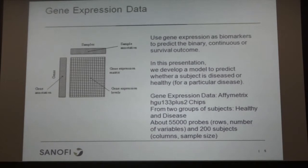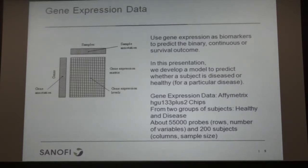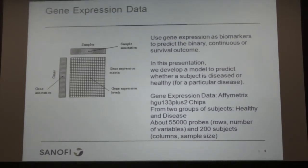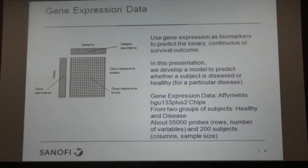The data structure is quite straightforward — it's just a big matrix. Each row includes all the data from one particular gene, so we have many rows and many columns. Each column is for one sample, patient, or subject. The goal is to predict the outcome using gene expression — the outcome might be binary (disease or healthy), continuous like blood pressure, or a survival outcome.